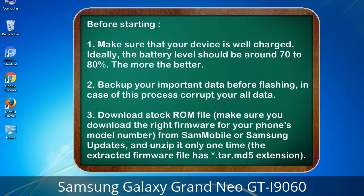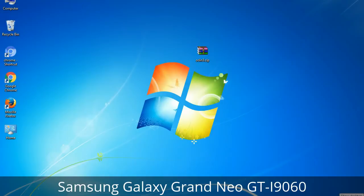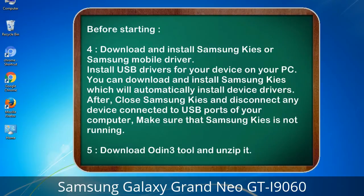Before starting: 1. Make sure that your device is well charged — ideally the battery level should be around 70 to 80%, the more the better. 2. Back up your important data before flashing, in case this process corrupts your data. 3. Download the stock ROM file. Make sure you download the right firmware for your phone's model number from Sammobile or Samsung Updates, and unzip it only one time. The extracted firmware file has a .tar.md5 extension.